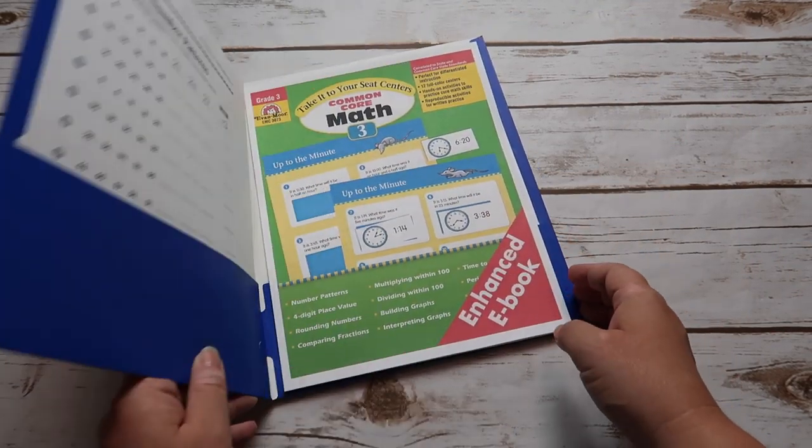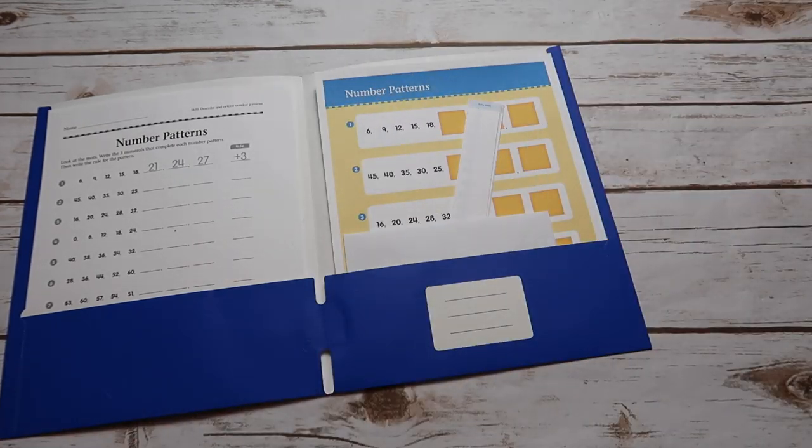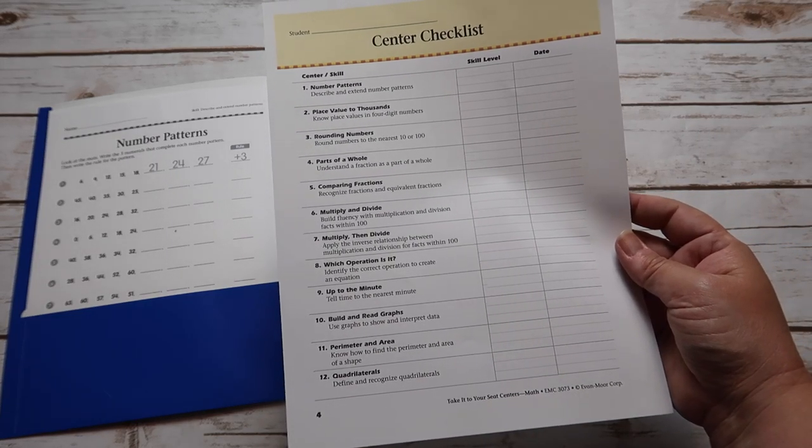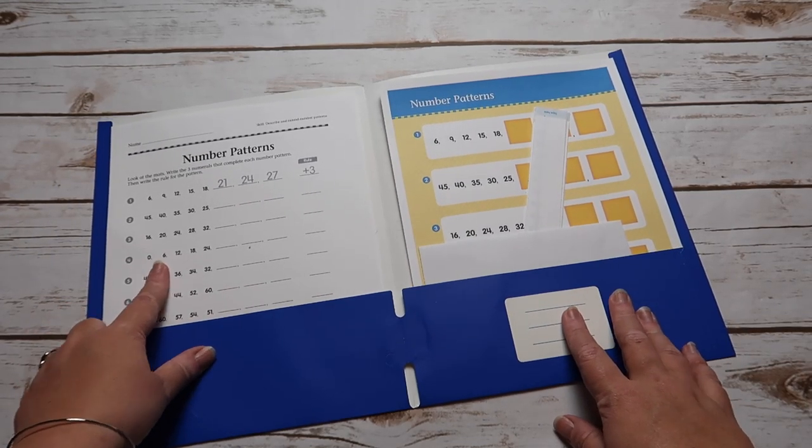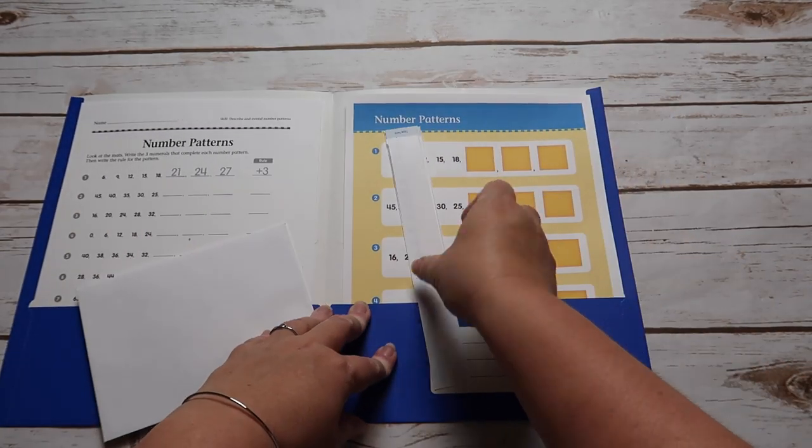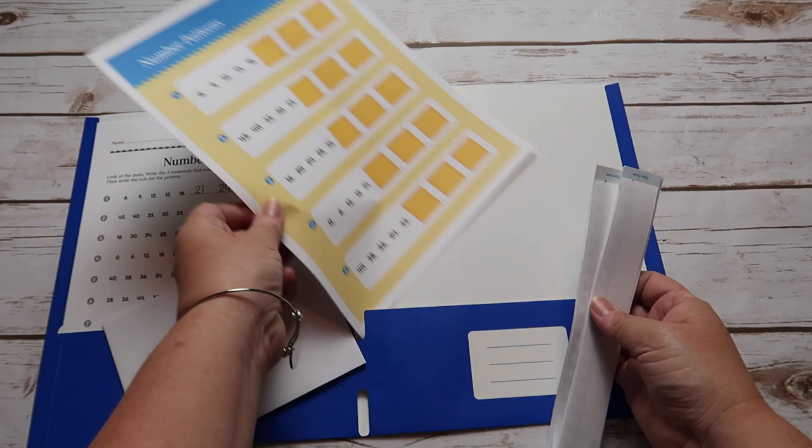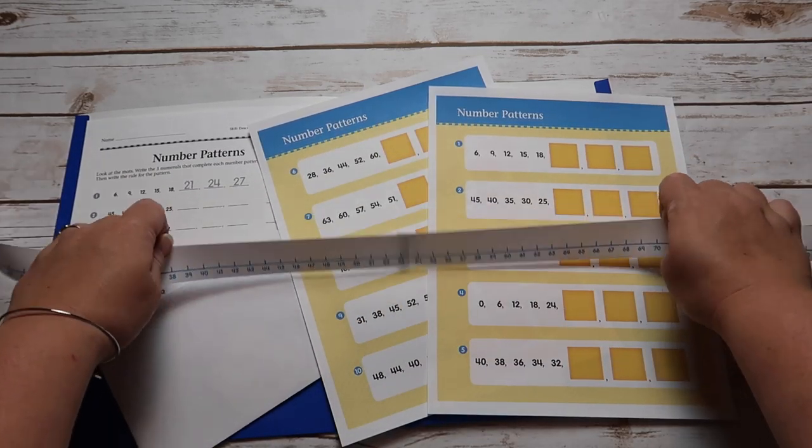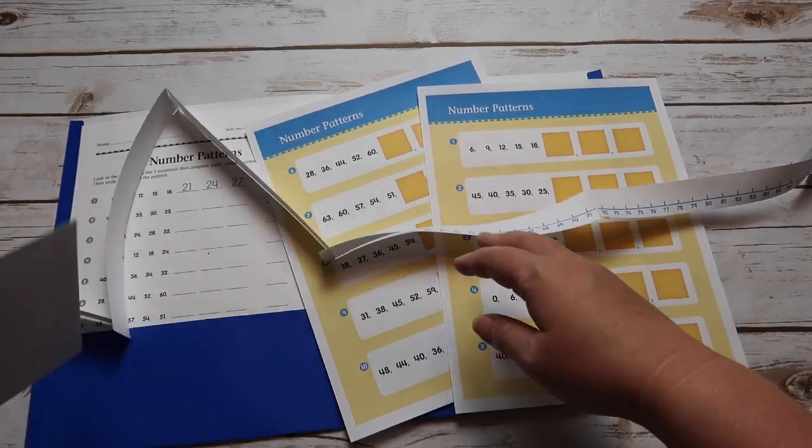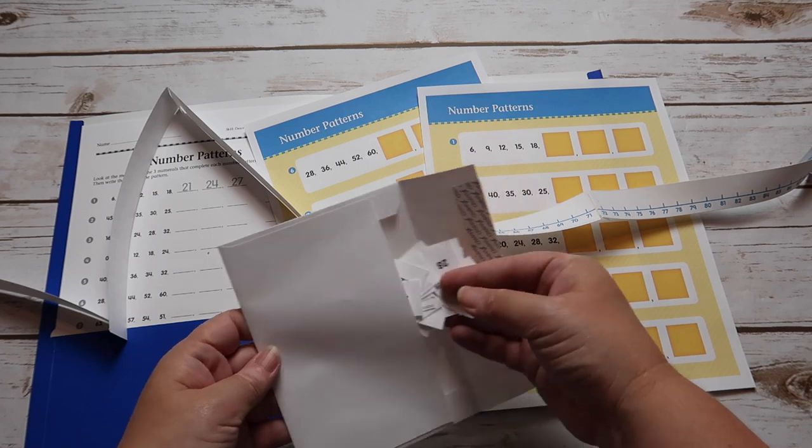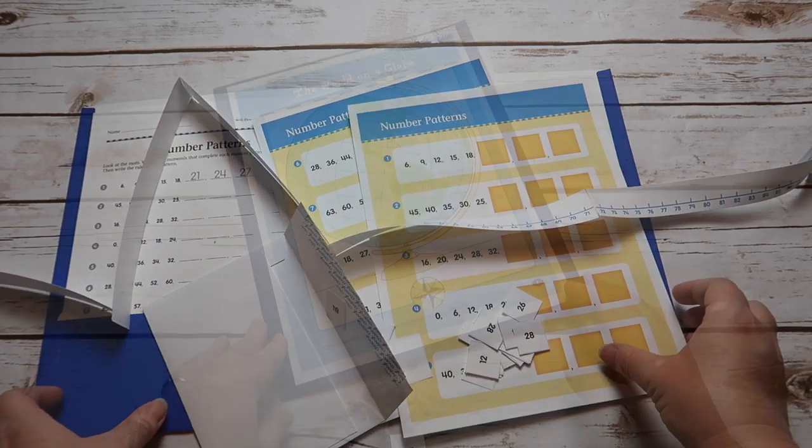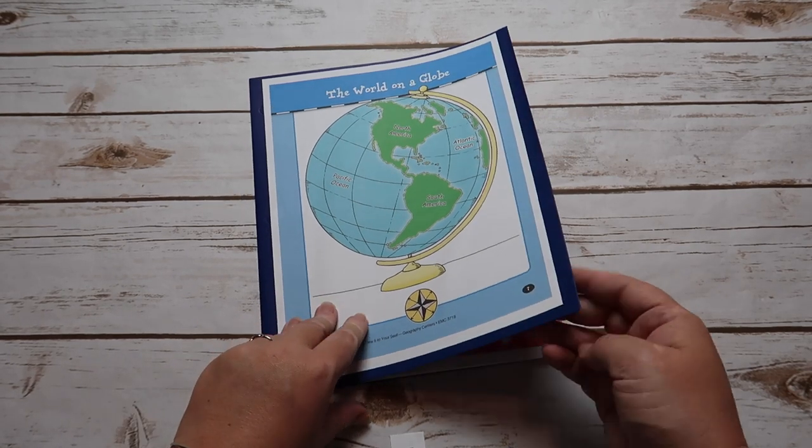The next one we'll be looking at is number patterns. This one is from the math book. The one we'll be looking at today is grade three. This one includes 12 different centers. And this is a number pattern. So here you have your recording sheet. And then over here you have your two different mats. As well as a long number line to help you with your counting. So you would just get in here and put the numbers where they go. So you're doing that hands-on activity and then you're still recording it over here as well.